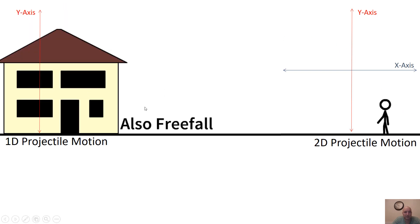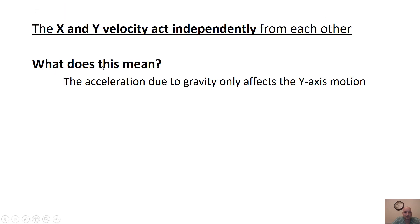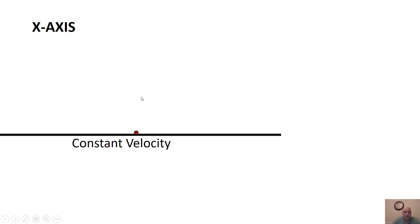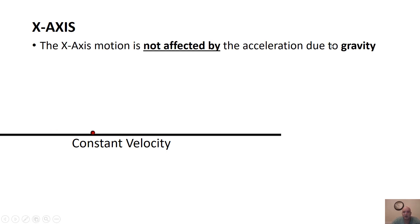A house falling on a person would also be considered free fall — anything under the influence of gravity doesn't have to be a ball. The X and Y velocity act independently from each other. The acceleration due to gravity is pulling something down to the ground, creating an acceleration on the Y axis motion only. What that does is leave the X axis in constant velocity — this ball is going to be moving at the same rate the whole time, constantly moving to the right. It's not affected by acceleration due to gravity.